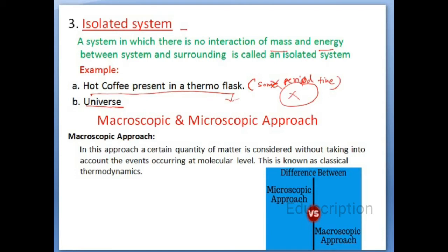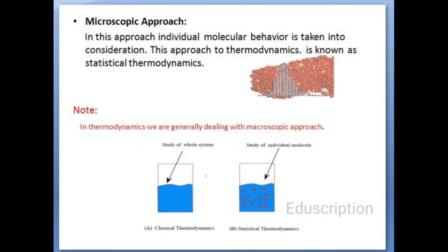Now the important one is the approach. There are two types: macroscopic and microscopic approach. In the macroscopic approach, a certain quantity of matter is considered without taking into account the events occurring at the molecular level — this is known as classical thermodynamics. In the microscopic approach, individual molecular behavior is taken into consideration — this approach to thermodynamics is known as statistical thermodynamics.